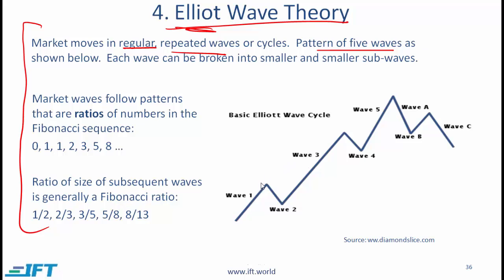Wave 1 is up, 2 down, 3 up, 4 down, 5 up, and then a reversal. Following the reversal, you have wave A, B, and C.